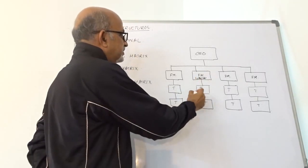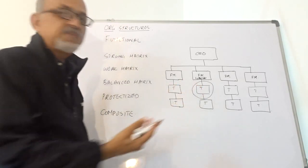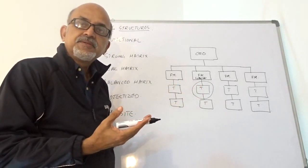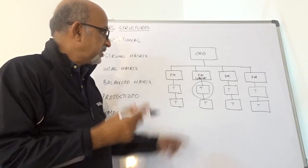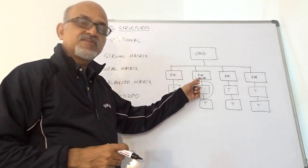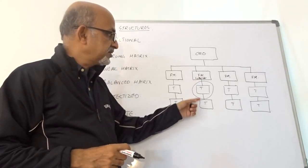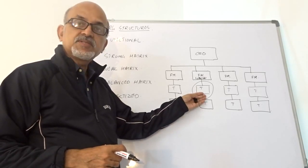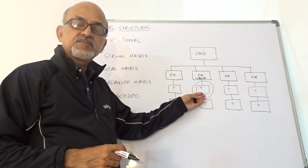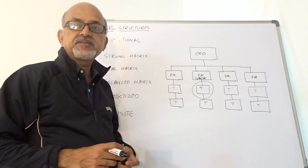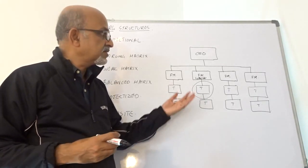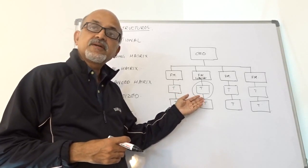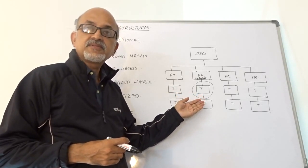He will appoint one of his key department members as the project manager. So the project manager in this case will report to the functional manager. And as a supplier, you may interact with this particular customer's project manager. In a functional organization, the project manager has very less authority levels.